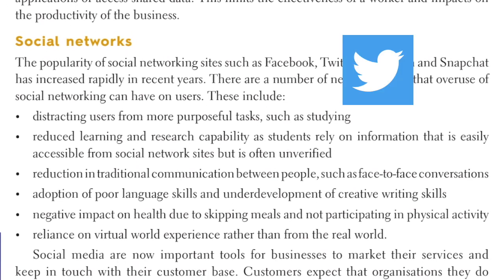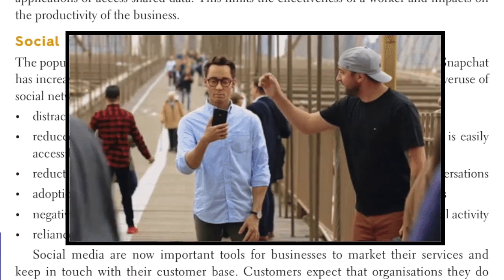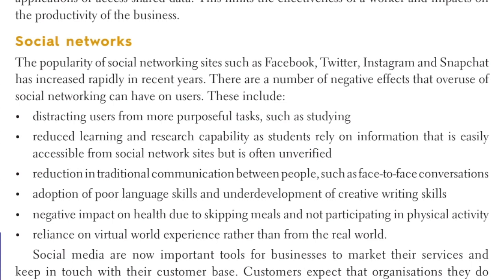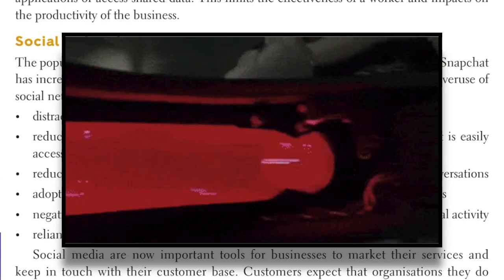Social networks: the popularity of social networking sites such as Facebook, Twitter, Instagram, and Snapchat has increased rapidly in recent years. There are a number of negative effects that overuse of social networking can have on users. These include distracting users from more purposeful tasks such as studying; reduced learning and research capability as students rely on unverified information from social network sites; reduction in traditional communication such as face-to-face conversations; adoption of poor language skills and underdevelopment of creative writing skills; negative impact on health due to skipping meals and not participating in physical activity; and reliance on virtual world experience rather than the real world.